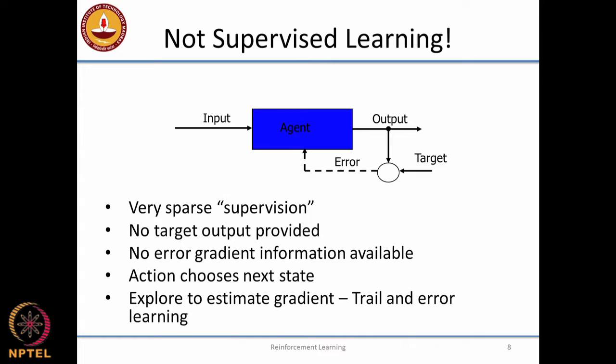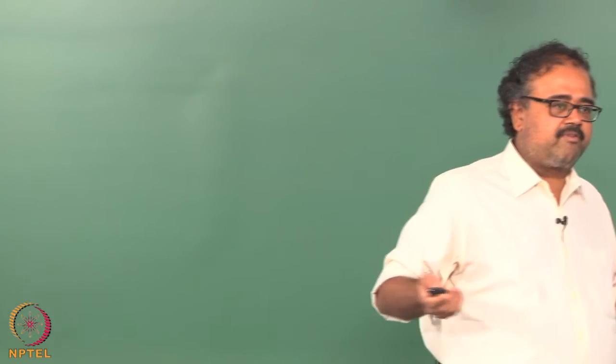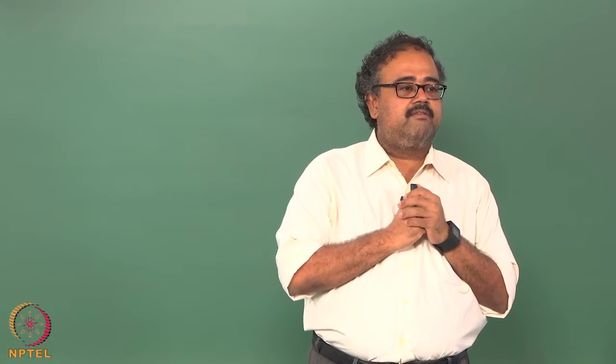This is not supervised learning. In supervised learning, there is an input, an output you produce, and someone gives you a target output. You compare your output to the target, form an error signal, and train using gradient descent to minimize the error. In reinforcement learning, I have to learn a mapping from input to output, but I have no target and therefore cannot form an error.